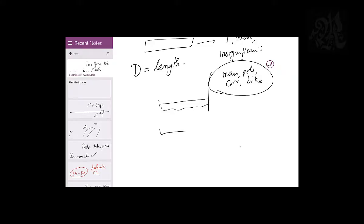When a train crosses something significant — for example, a bridge of length L — the distance covered will be the length of the bridge plus the train length. That's it for trains. When you cross something insignificant, you cover your own length. When you cross something significant, you cover your length plus that object's length.